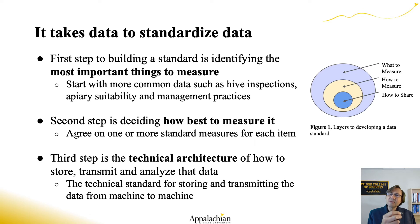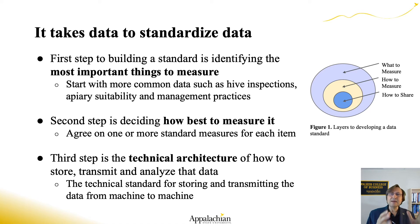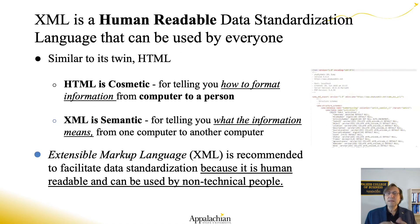After that, there's the technical architecture — we have to have similar data on similar topics stored in a way that they can be put together and merged with whatever people are willing to share to help enable this data science. This is the technical standard for storing and transmitting the data; it defines the data type and how to move that forward. This is where XML comes in.